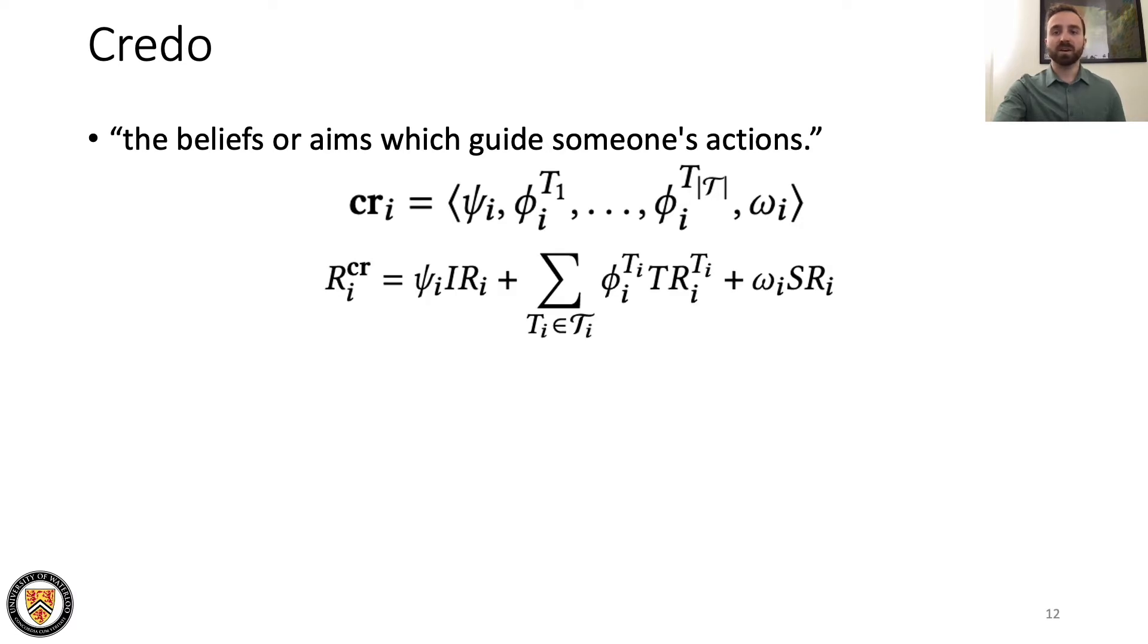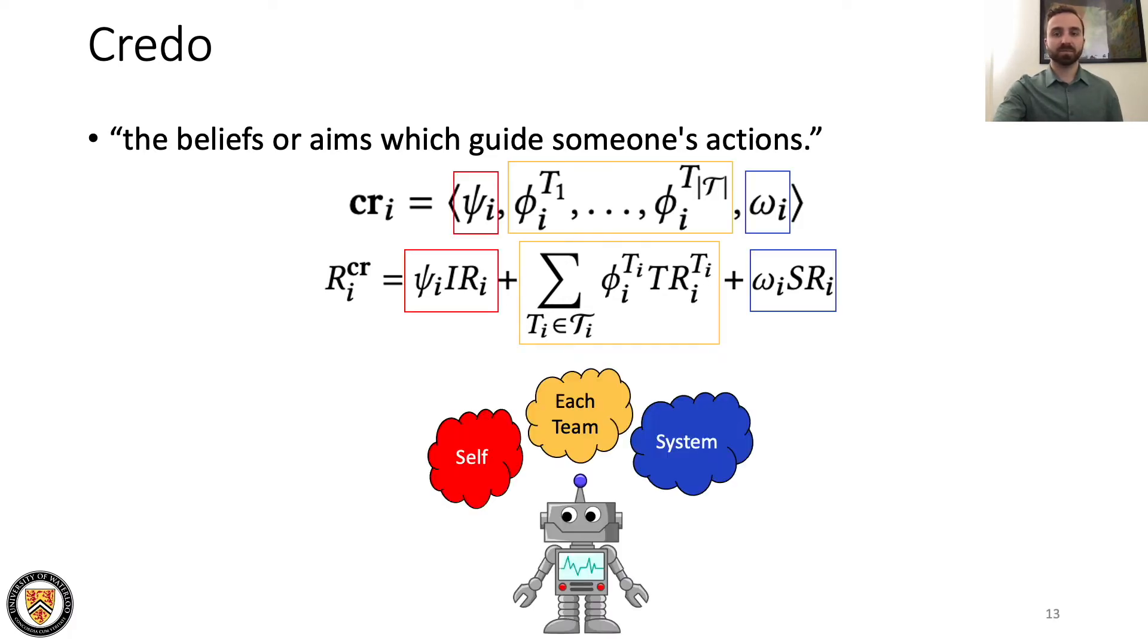Credo is defined by a vector of parameters that instantiates a new reward function for each individual agent. Credo regulates how much agents care about various groups that they belong to, either themselves, any team that they may belong to, or the entire system.